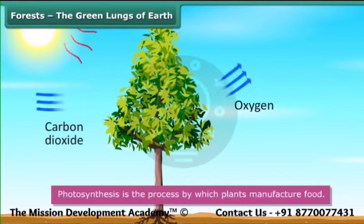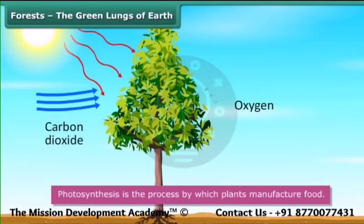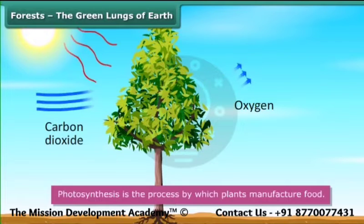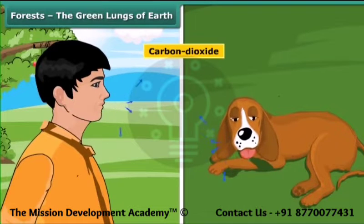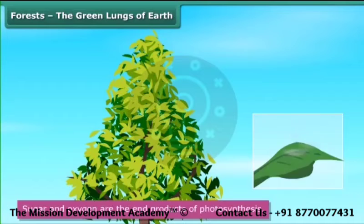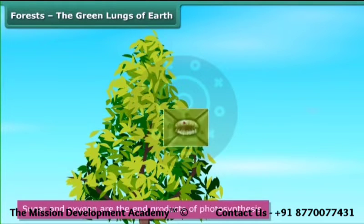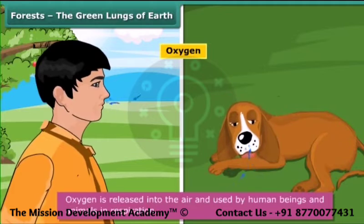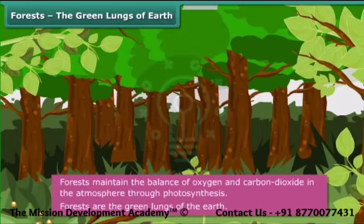Photosynthesis is the process by which plants manufacture food. In this process, plant leaves use light from the sun to synthesize food from carbon dioxide and water. Carbon dioxide is released by human beings and animals. Water is absorbed from the soil by plants. Sugar and oxygen are the end products of photosynthesis. Sugar is transported to the rest of the plant. Oxygen is released into the air and used by human beings and animals in respiration. That is why forests are called the green lungs of the earth.